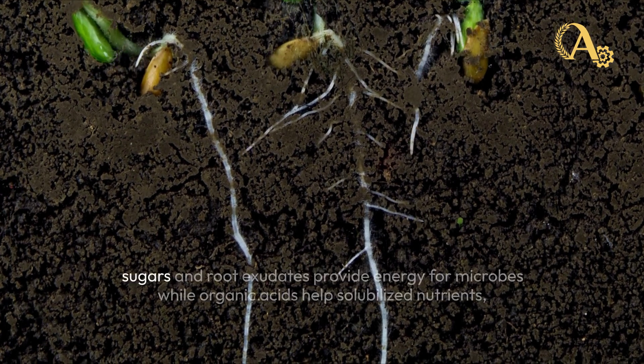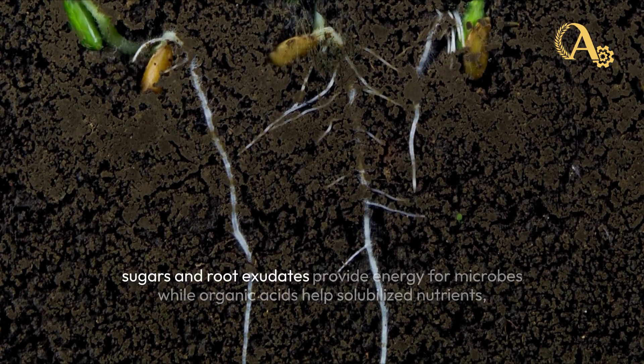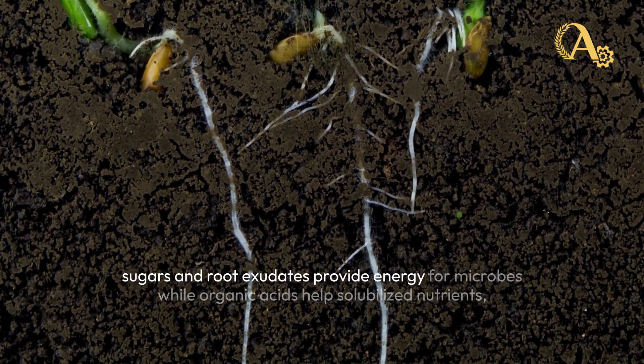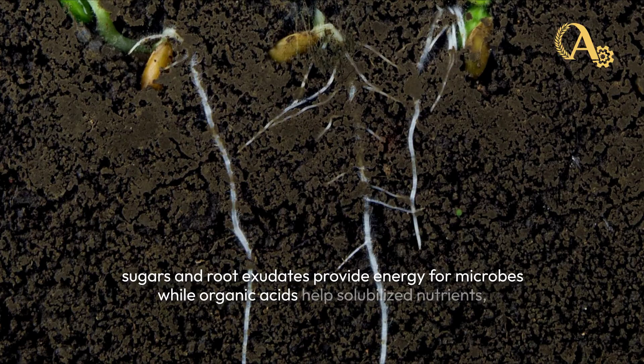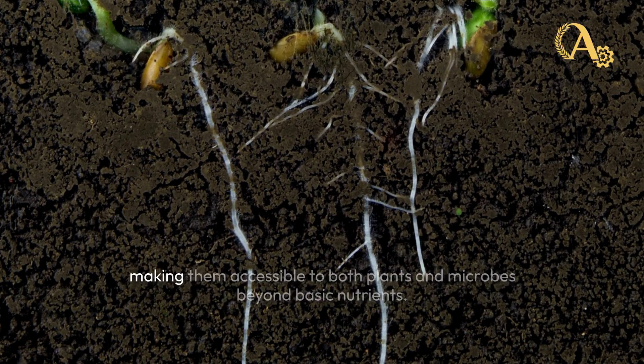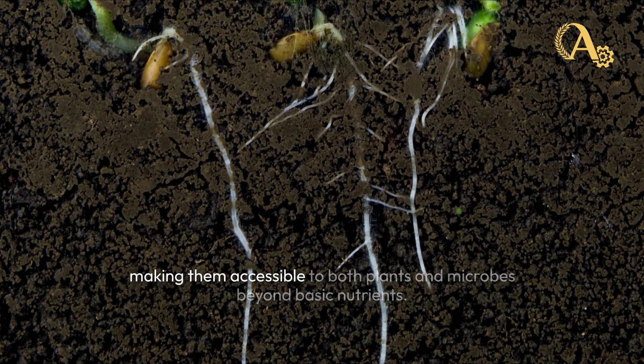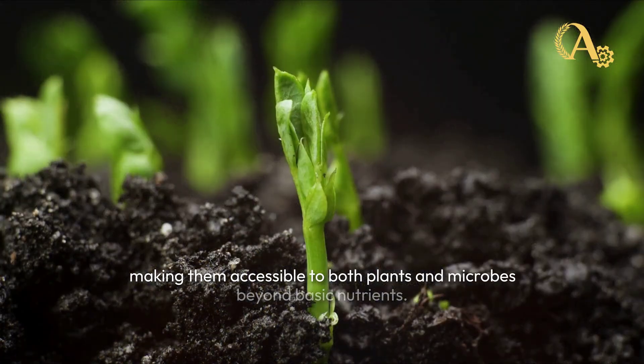For example, sugars in root exudates provide energy for microbes, while organic acids help solubilize nutrients, making them accessible to both plants and microbes.